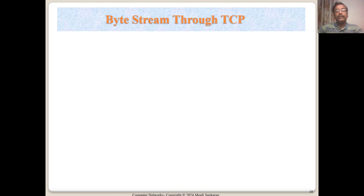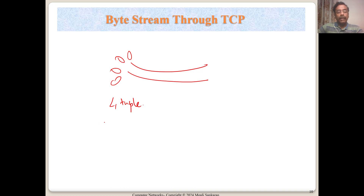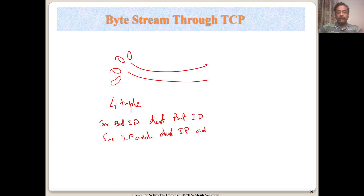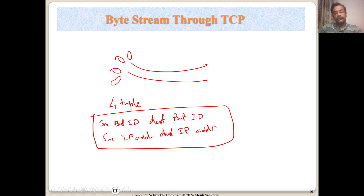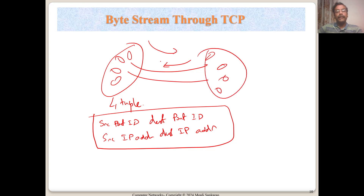Socket programming is used for both UDP and TCP. A socket is defined by a four-tuple: source port ID, destination port ID, source IP address, and destination IP address. For any connection — TCP or UDP — these four values on the internet need to be unique, so data can be delivered to a particular individual process.